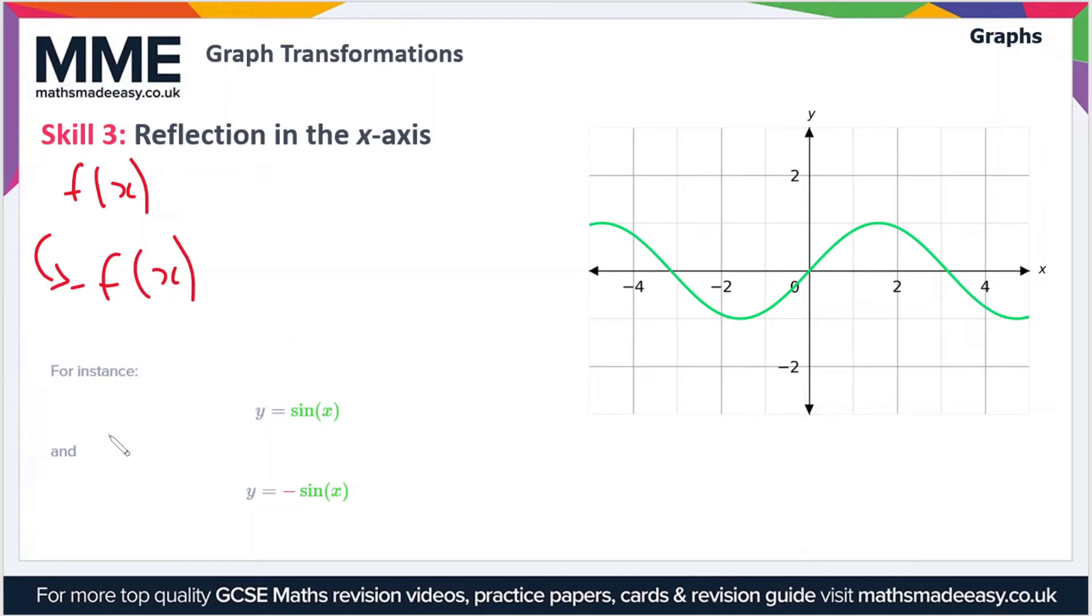For instance, if we have the graph of y = sin(x), then in order to flip that in the x-axis or reflect it in the x-axis, we would make the graph y = -sin(x). The effect of this is that every positive y value is made negative. So the graph would look something like this.